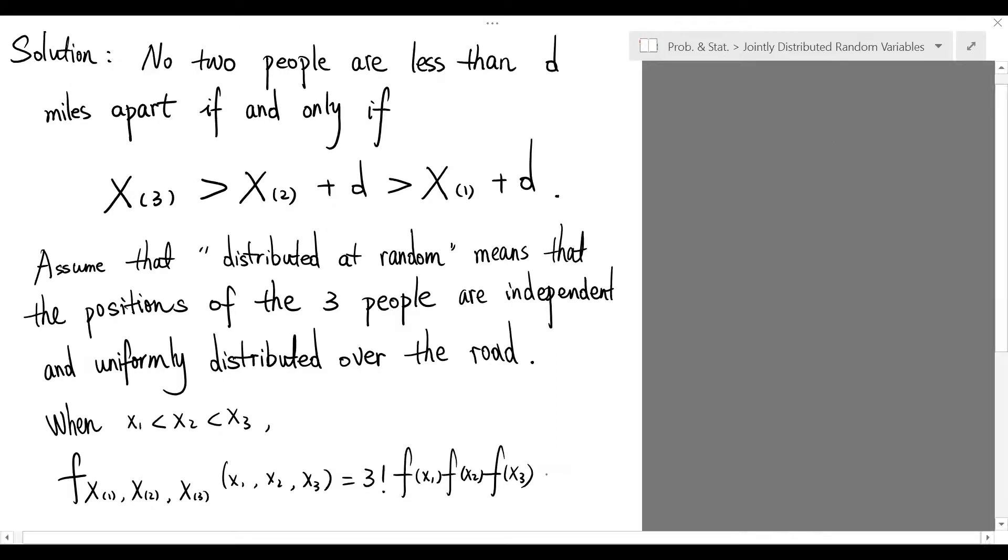Hence, we have joint density function equals to simply 3 factorial when x sub 1 is less than x sub 2 less than x sub 3.